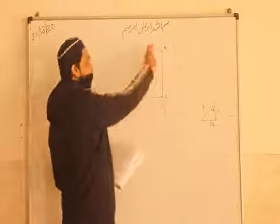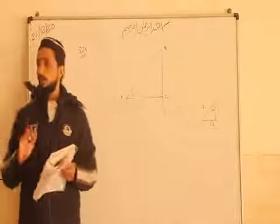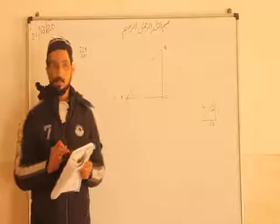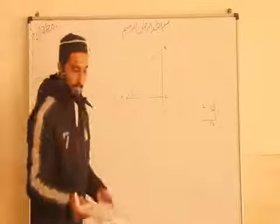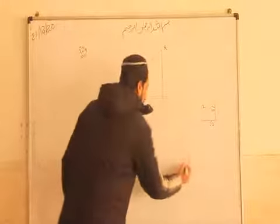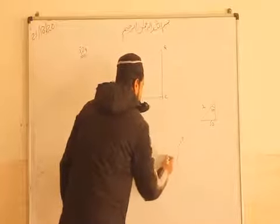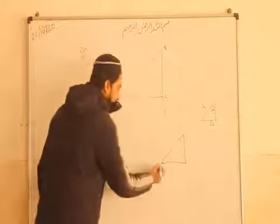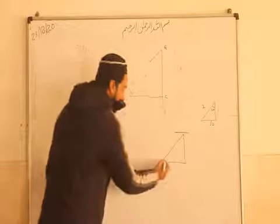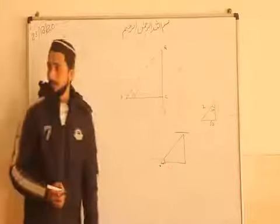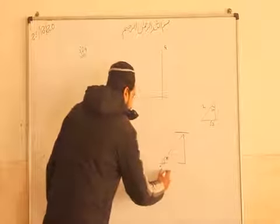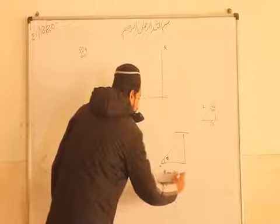A person is looking at the top of this building, so there is a formation of an angle. That angle is known as the angle of elevation. When we study the concept of height and distance, there are two angles. Suppose there is a point and we are looking at the top of something — we form an angle. That angle is known as the angle of elevation. This theta is known as the angle of elevation.